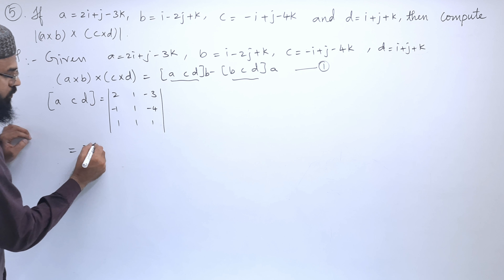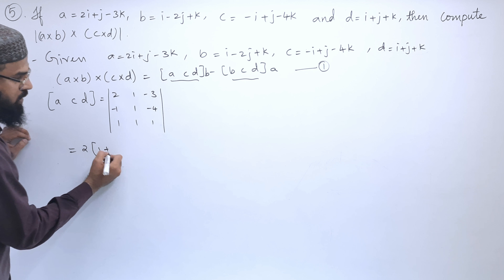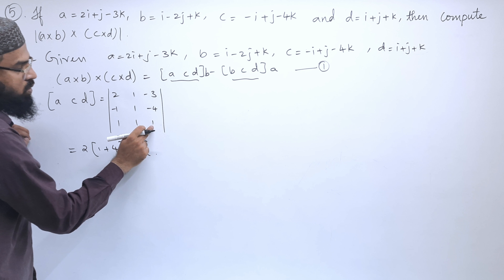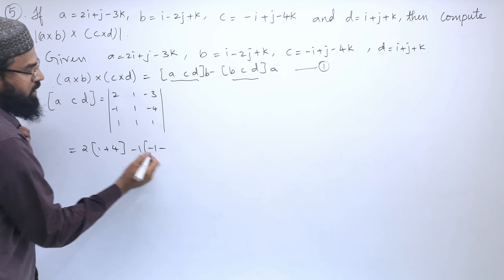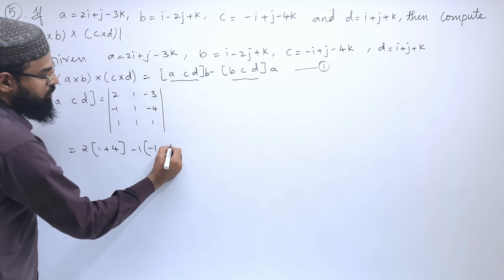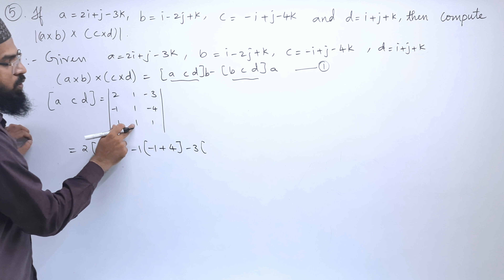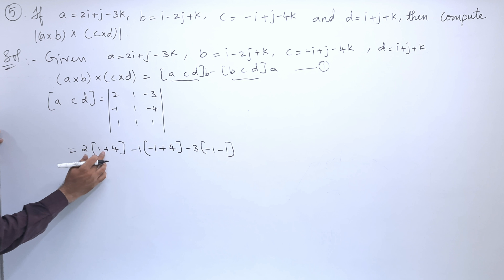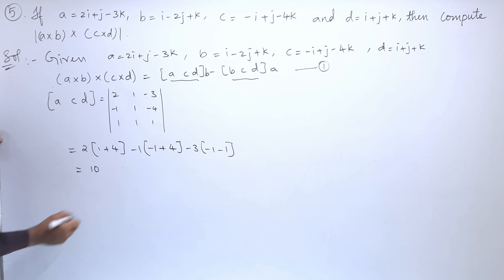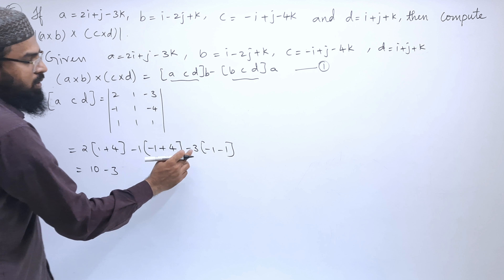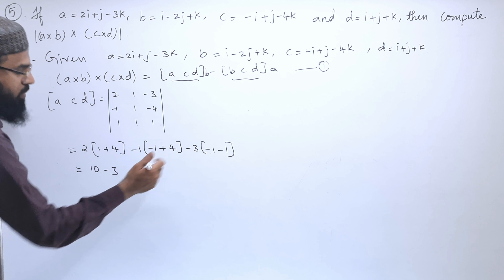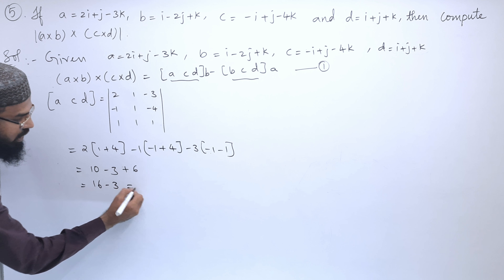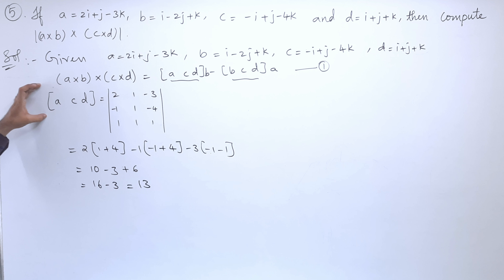Expanding the determinant: 2 times (1×1 − (−4)×1) minus 1 times ((−1)×1 − (−4)×1) plus (−3) times ((−1)×1 − 1×1). This gives 2(1+4) − 1(−1+4) + (−3)(−1−1) = 2(5) − 1(3) + (−3)(−2) = 10 − 3 + 6 = 13. So the box product [A, C, D] equals 13.